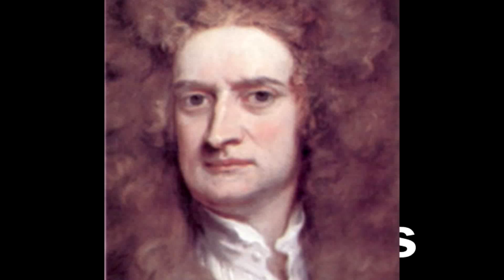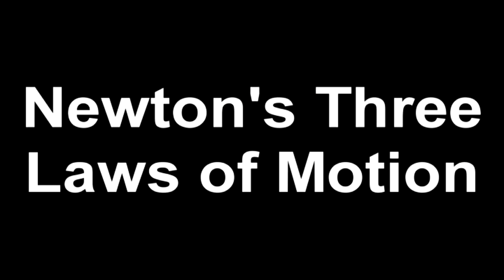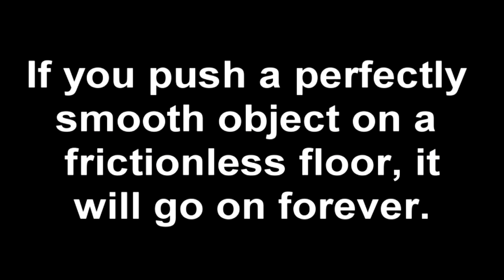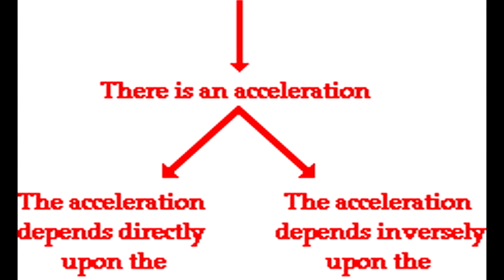Force is measured by newtons. A force that causes a mass of one kilogram to accelerate one meter per second is equal to a newton. Newton came up with three laws of motion. The first law of motion is: if the total force of an object is zero, the object stays in that motion. For example, if you push a perfectly smooth object on a frictionless floor, it will go on forever.